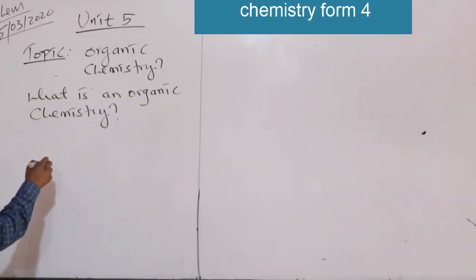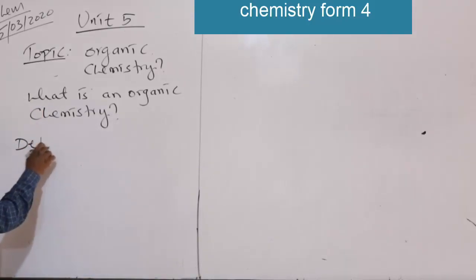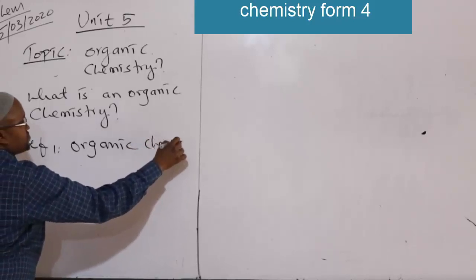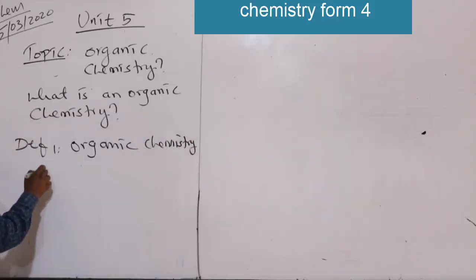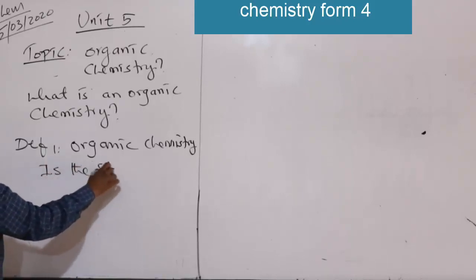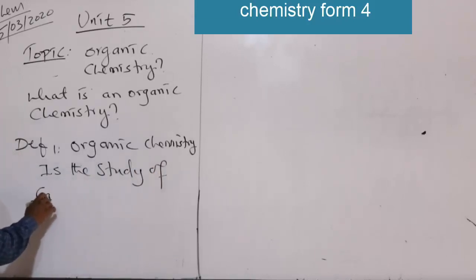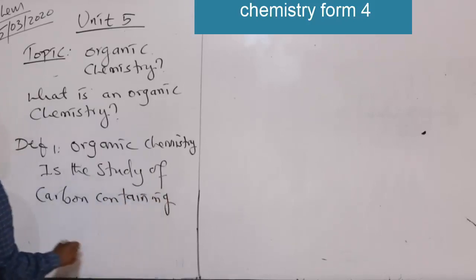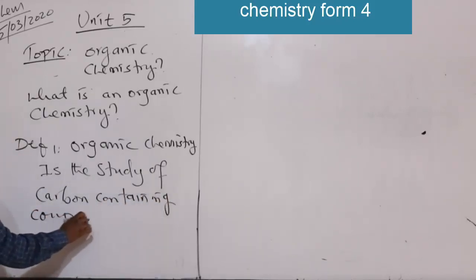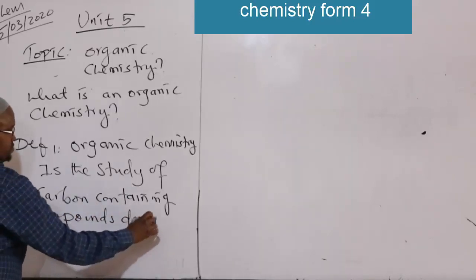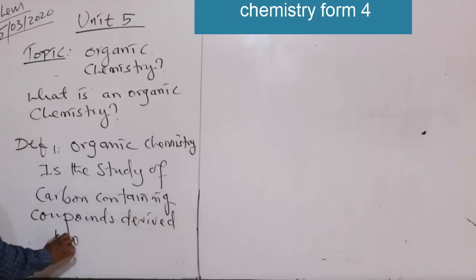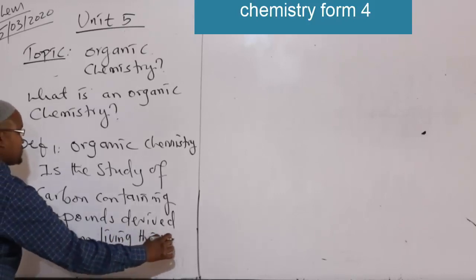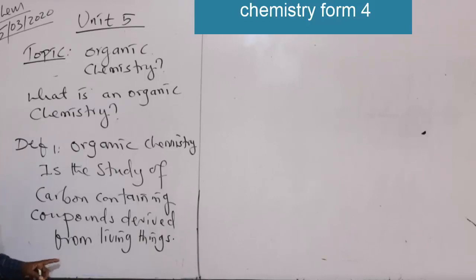Definition 1: Organic chemistry may be defined as the study of carbon-containing compounds derived from living things. That is the first definition we have in organic chemistry.